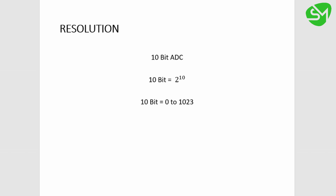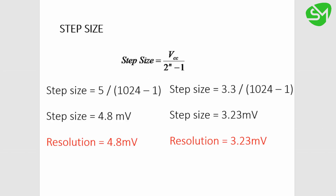The most commonly used resolution for ADC is 10-bit resolution. That means it will have values of 2 to the power 10, which is 1024. The value will vary from 0 to 1023. Using the formula — VCC divided by (2 to the power n minus 1) — you can calculate the step size of the ADC. For a microcontroller working on 3.3 volts, that is 3.3 divided by 1023, giving a step size of 3.23 millivolts.